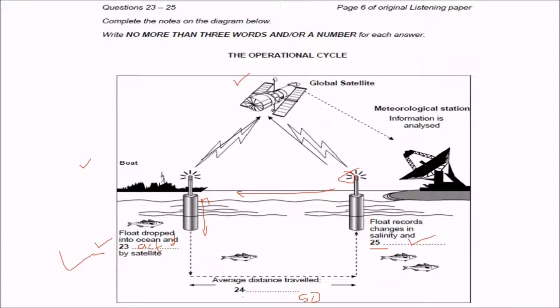24 is approximately around average, approximately 50 kilometers that are already written. And float records changes in salinity, and this 25th can be temperature. Temperature changes, so you can write just temperature. So this was our first tape script or part of this tape script.